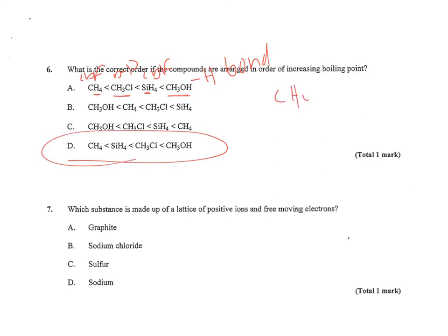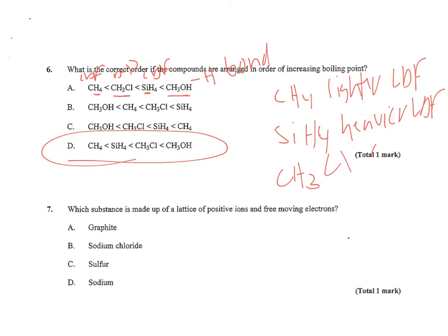Well, SiH4 also is going to have just London dispersion forces, but the Si is heavier than the carbon. So my correct order is right here because I've got CH4, lighter with London dispersion forces. I've got SiH4, which is slightly heavier with just London dispersion forces. And then I have CH3Cl that has dipole-dipole forces, and finally CH3OH, which has the hydrogen bond.